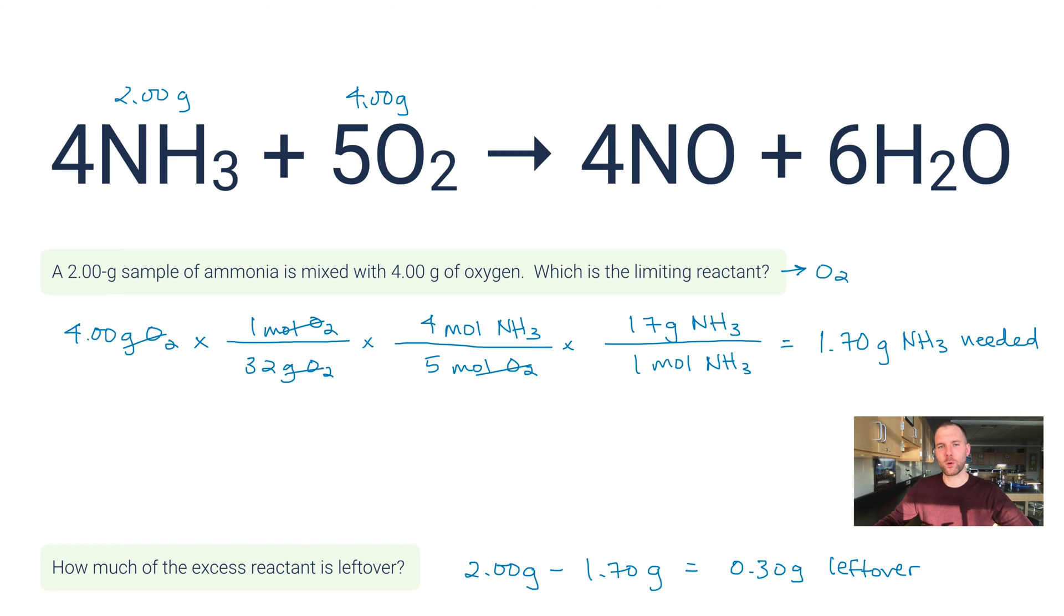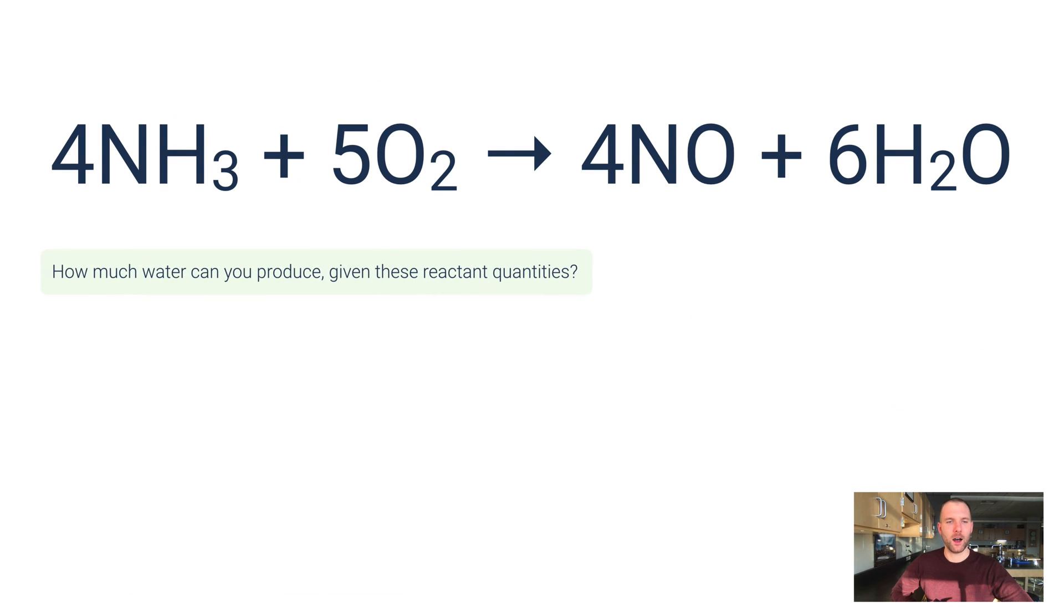Let's do one more question about this. It says, how much water can you produce given these reactant quantities? I had 2 grams of this and 4 grams of this, and I was able to determine that this was my limiting reactant. If it's asking how much of a product you can make and you're aware of which reactant is the limiting reactant, you want to calculate how much of the products you can make from the limiting reactant, not from the excess reactant.